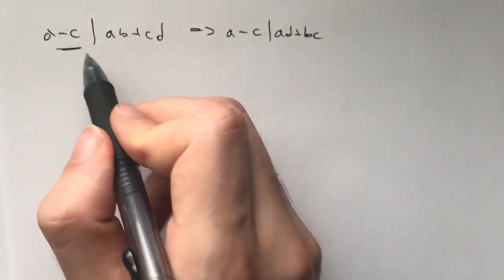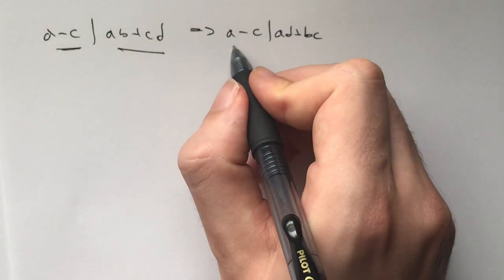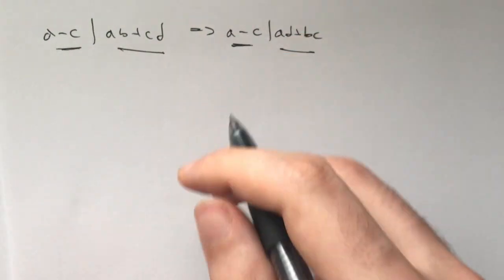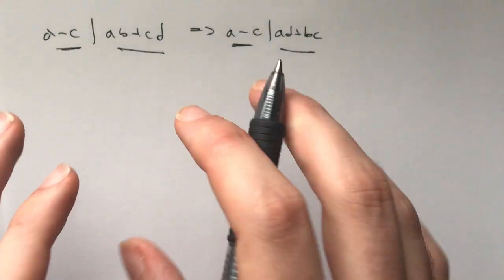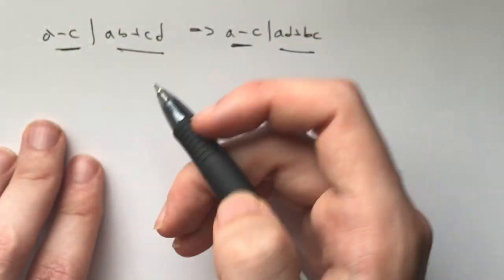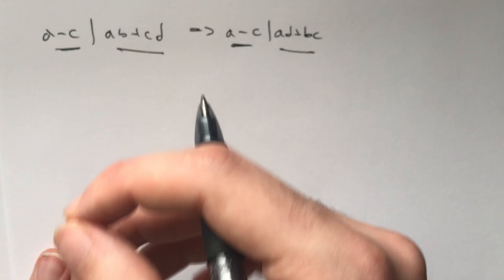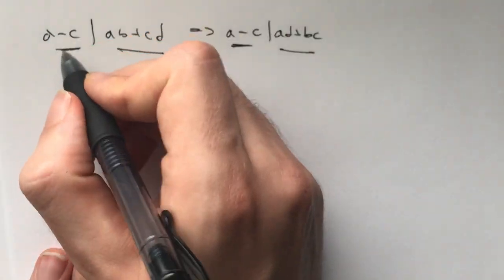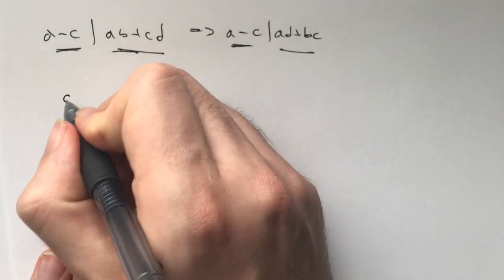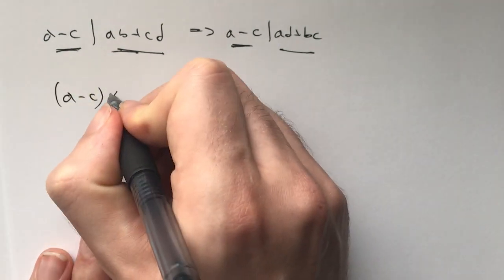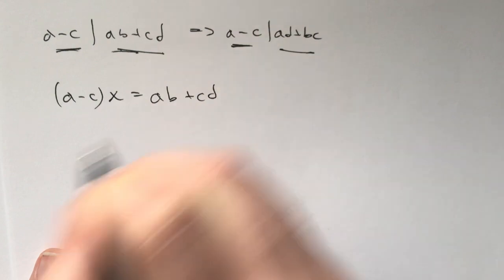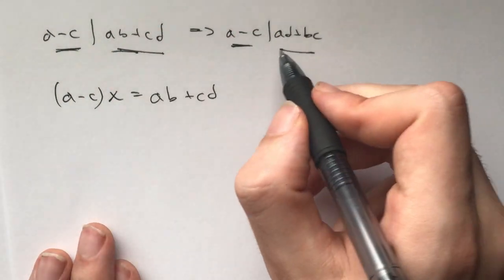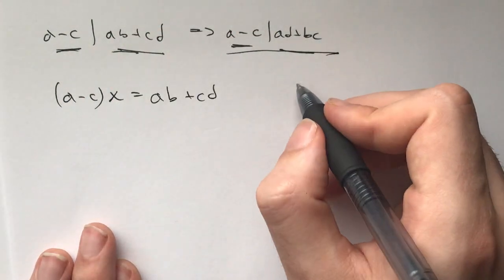We must prove that if (a-c) divides this, then (a-c) divides this. How do we go about doing this? First and foremost, what is divisibility? I'm trying to teach you some lessons in number theory through problems. This divides this means there exists an integer x such that (a-c) times x is ab plus cd.